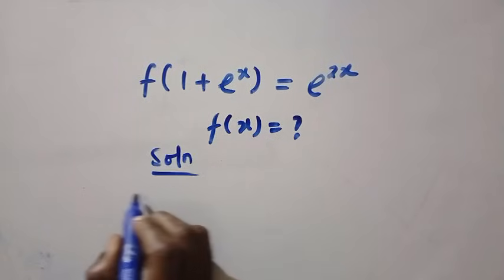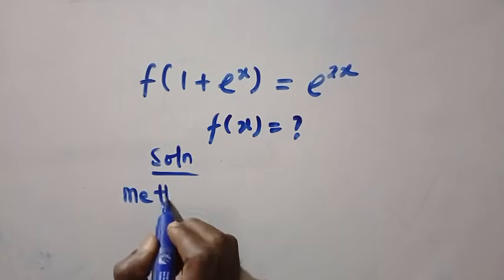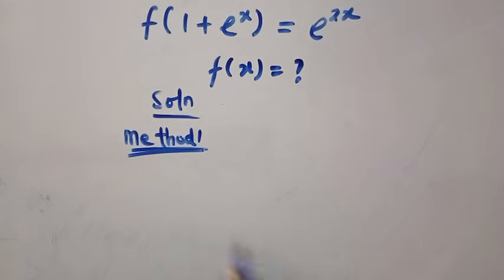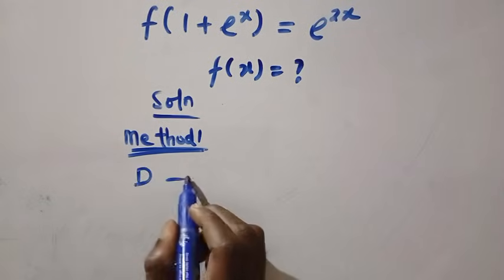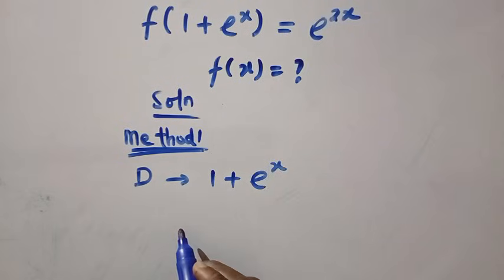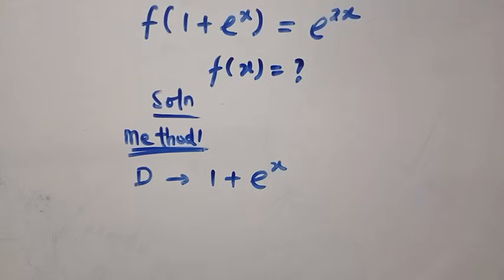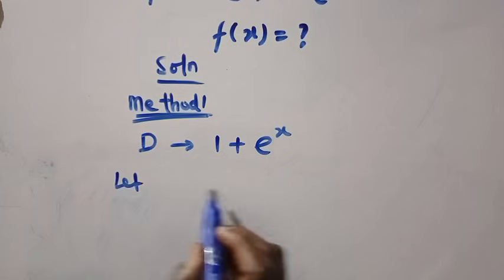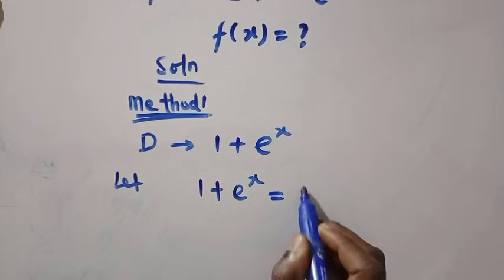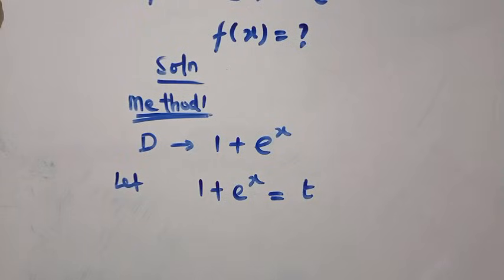Consider the solution — here is Method 1. In the first method, we have the domain of this function, which gives us 1 plus exponential x, where x is a member of the real numbers. Then, in the first method,